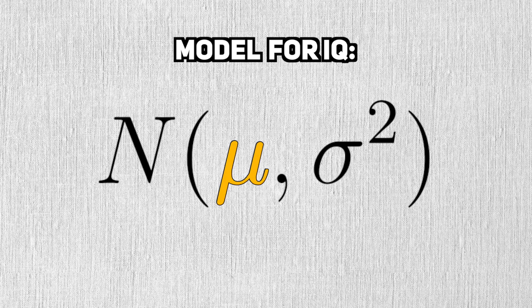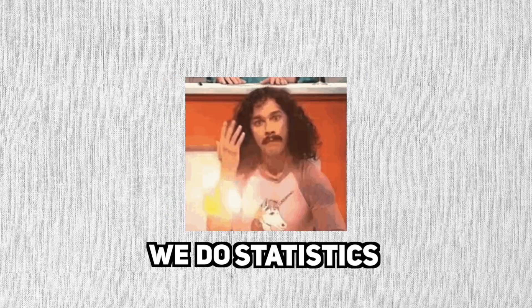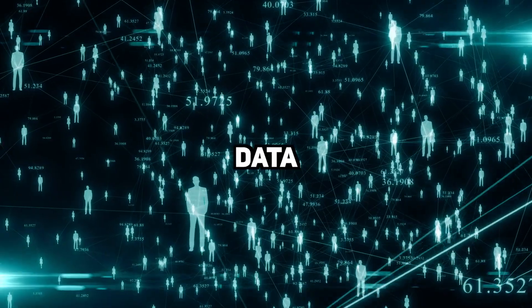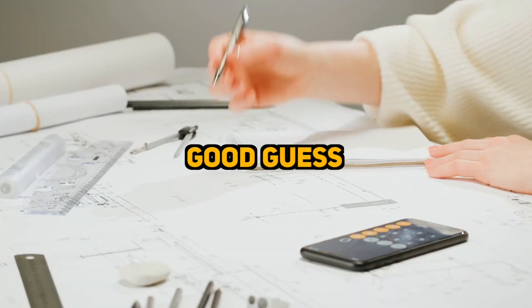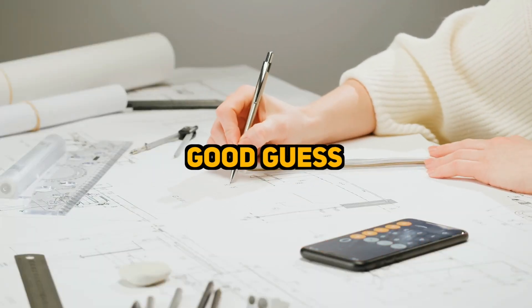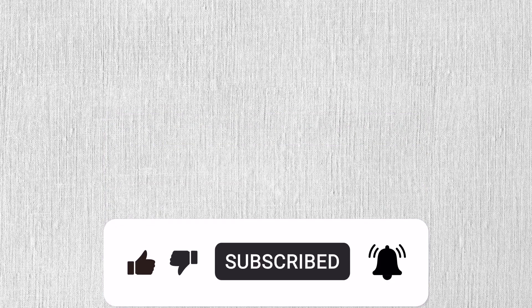For this particular question, I don't really care about the variance. If we don't know the value of the parameter, what can we do? We do statistics, of course. We gather data from a sample of YouTubers and create a good guess for the value of the parameter, but that's another video. This has been a Pocketstat on parameters. Thanks for watching. If you liked this video, please consider subscribing, and I'll see you in the next one.